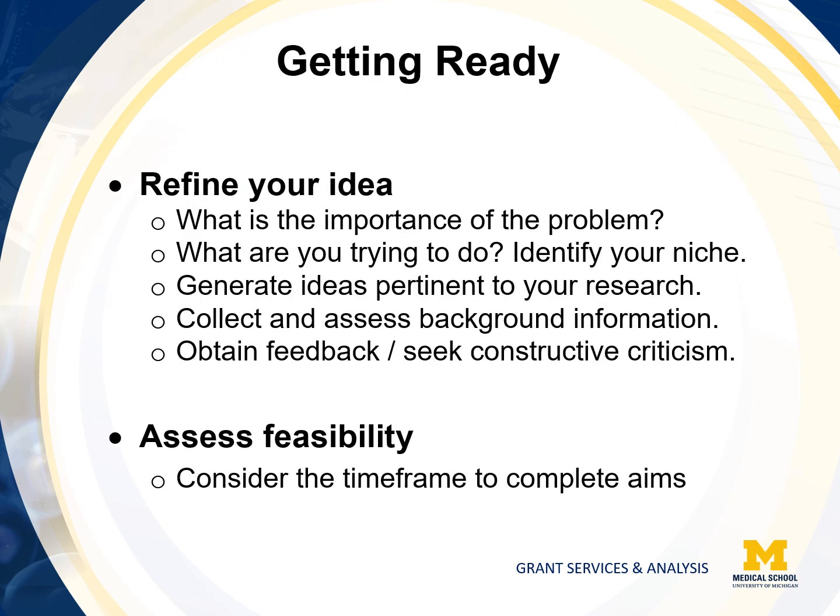Before you begin writing your specific aims, there are several points to consider. Refine your ideas — what is the importance of your problem? What are you trying to do? Define your niche. Generate ideas pertinent to your research, and collect and assess background information. Also, obtain feedback and seek constructive criticism from colleagues or friends. Finally, assess feasibility. Make sure you can complete your AEMs within the timeframe of the award. For an R01, that's typically four to five years.